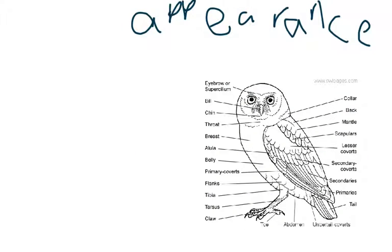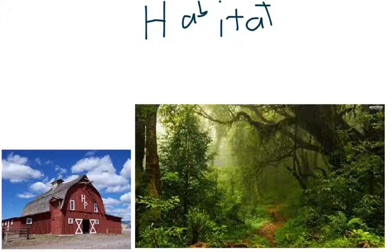An owl can turn its head around all the way. And it has a back, bill, chin, throat, belly, fangs, and claws, and even toes. This is the appearance of an owl.